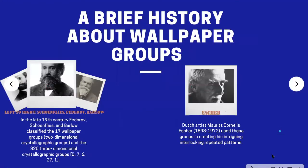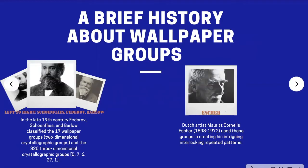A brief history of wallpaper groups: we take note of these notable people — Schoenflies, Fedorov, and Barlow. In the late 19th century, Fedorov, Schoenflies, and Barlow classified the 17 wallpaper groups, or two-dimensional crystallographic groups, and the 3D crystallographic groups, namely 5, 7, 6, 27, and 1. The most notable person in the terms of wallpaper groups is Escher — Dutch artist Moritz Cornelius Escher used these groups in creating his intriguing interlocking repeated patterns.